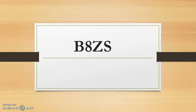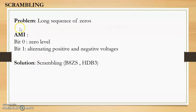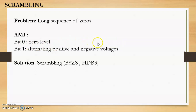In this video we will discuss B8ZS, which is a scrambling technique. One of the main problems of line coding schemes is a long sequence of zeros. For example, in AMI, a bit zero is at the zero level and a bit one will be alternating positive and negative voltages. So if there are long sequences of zeros, the signal will remain at the zero level, creating synchronization problems. Scrambling techniques are used to solve this.